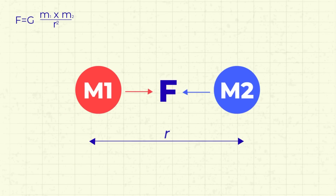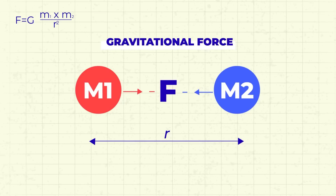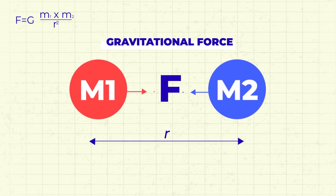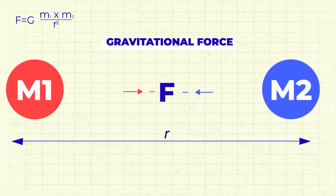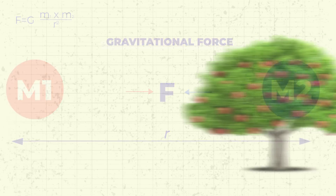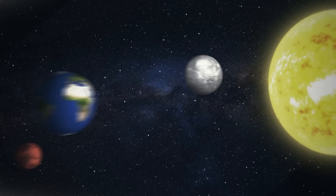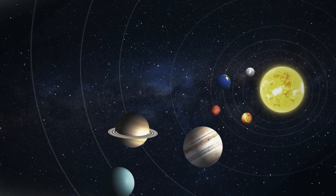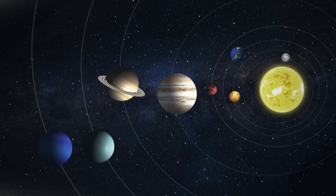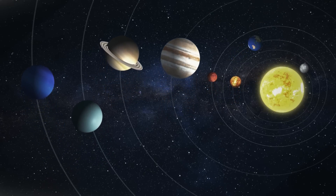Now this wasn't the first time that Newton's theory was not able to explain something. One such example was the discrepancy in the planet Mercury's orbit. According to Newton, every object in the universe attracts every other object. This gravitational force increases the heavier the objects are and decreases the further away they are from each other. This is the reason behind apples falling from trees and planets revolving around the sun. One consequence of Newton's theory was that planets revolve in elliptical orbits around the sun, and that is what we observed.